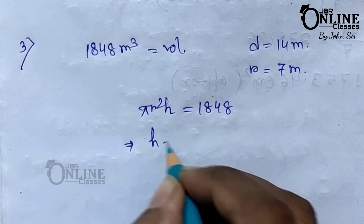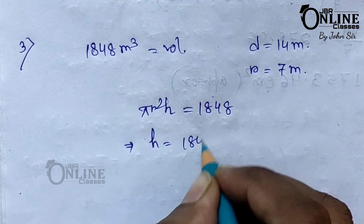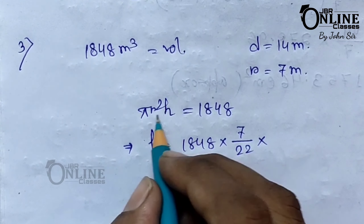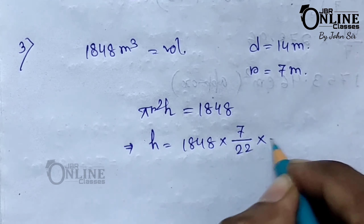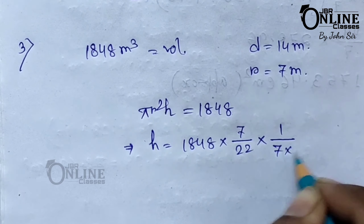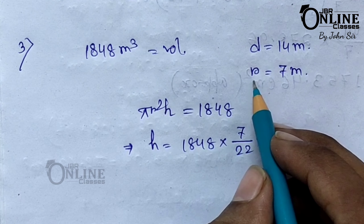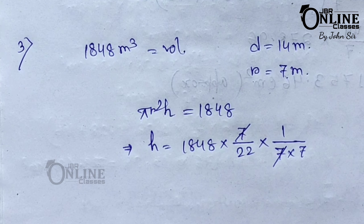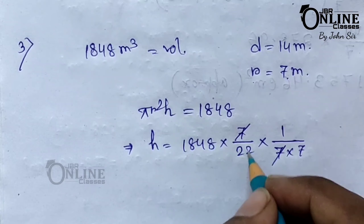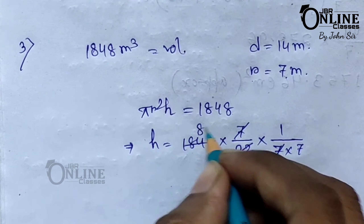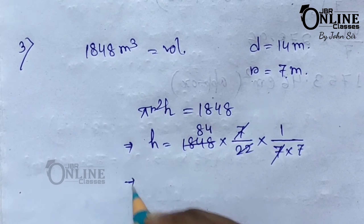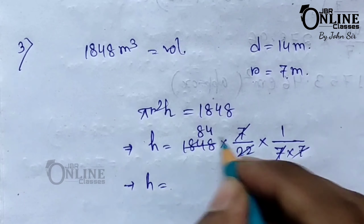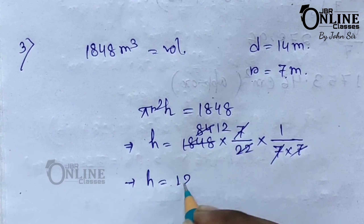Solving for h: h equals 1848 × (1/pi) × (1/r squared), that is 1848 × (7/22) × (1/49). The 7s cancel out, 1848 divided by 22 becomes 84, so h equals 84/7, and the final answer is h equals 12 meters.